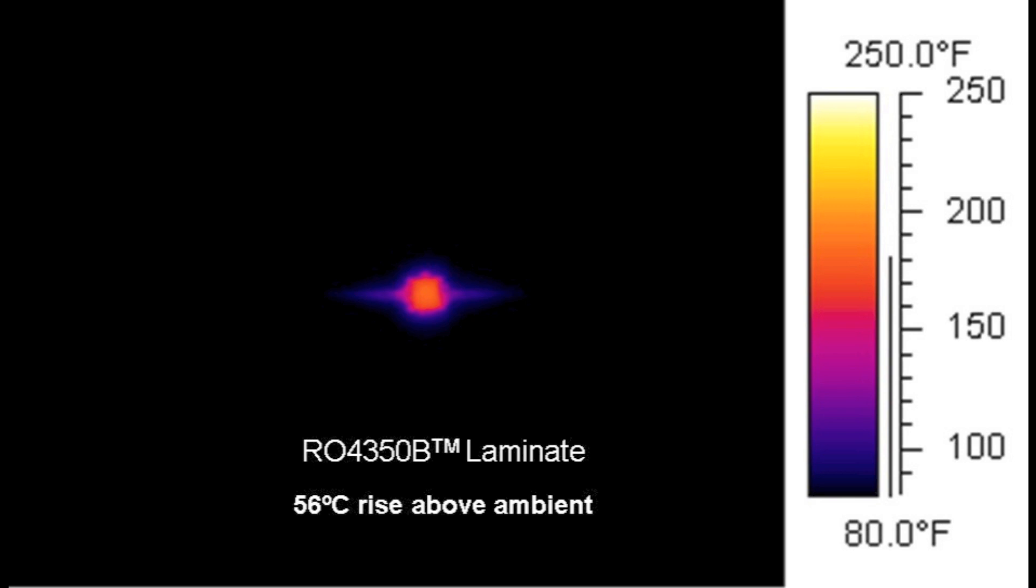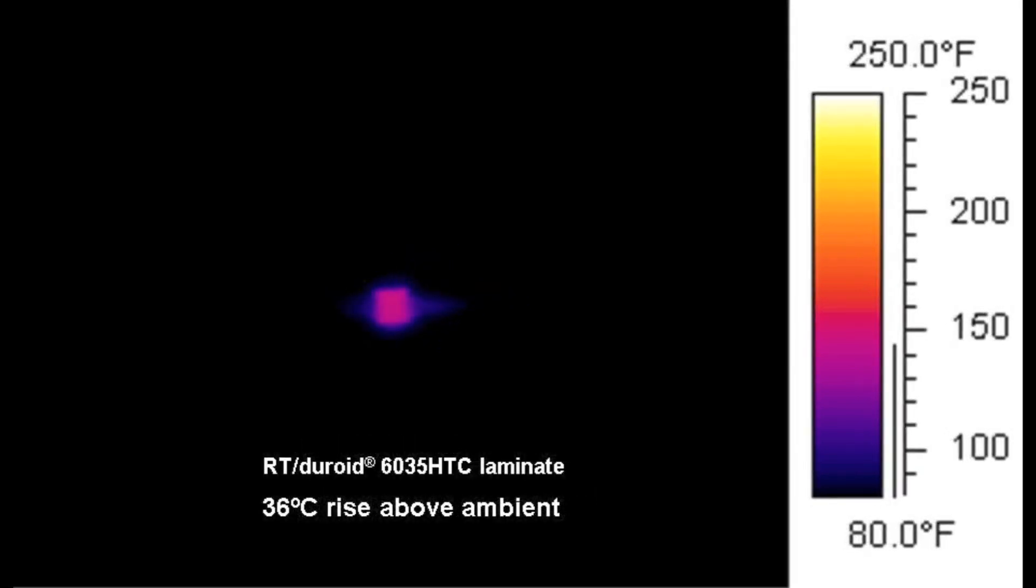To the right of that, the 4350B material, a ceramic-filled hydrocarbon material, had about 56 degrees C rise above ambient with thermal conductivity of about 0.62 watts per meter per K. Finally, the RT duroid 6035 HTC material has a thermal conductivity of 1.44 watts per meter per K, and you can see that has the lowest heat rise of about 36 degrees C above ambient.